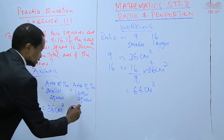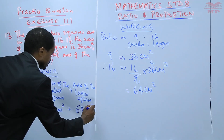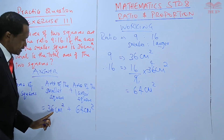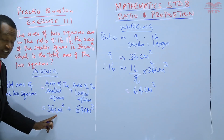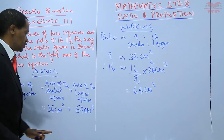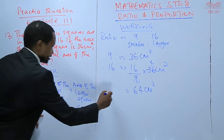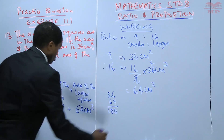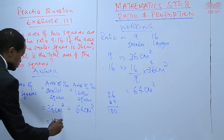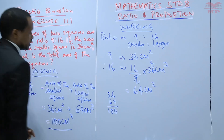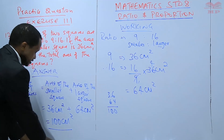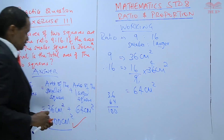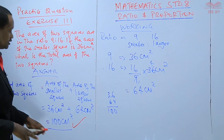So the area of the larger square is 64 centimeters squared. Therefore, 36 plus 64 is equal to 100 centimeters squared. Did you get the answer? If you got it, mark correct — 100 centimeters squared.